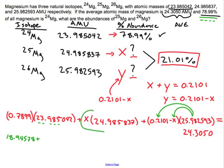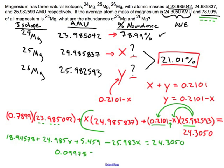Okay now I need this term is going to be 24.985x plus this number and this number combined. It's going to be 5.459 minus because of that little minus sign that's right there in front of that x, 25.983x is equal to 24.3050. Now I'm going to combine all of my terms that do not have an x and I'll put that on the left so 0.09978. It's going to be equal to then I'll have all my terms that do contain an x: negative 0.999x.